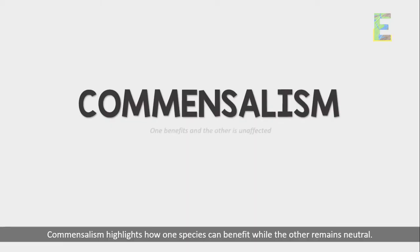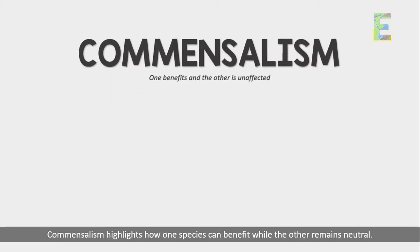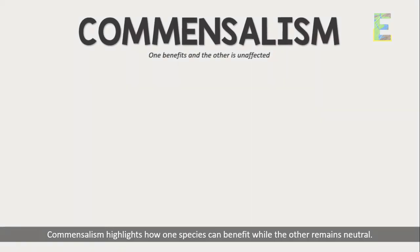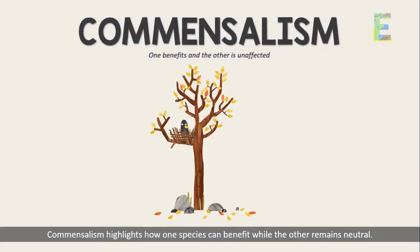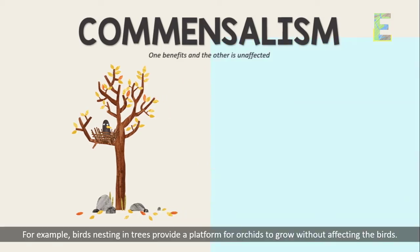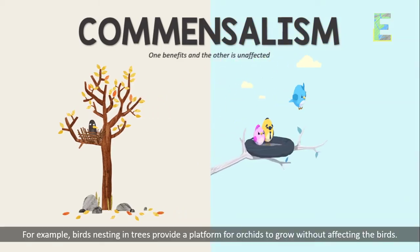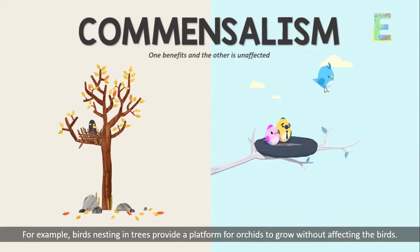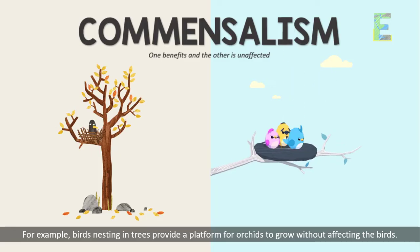Commensalism highlights how one species can benefit while the other remains neutral. For example, birds nesting in trees provide a platform for orchids to grow without affecting the birds.